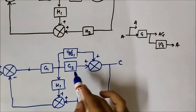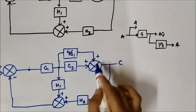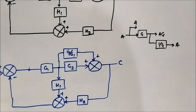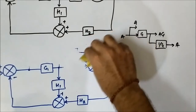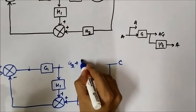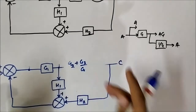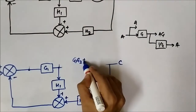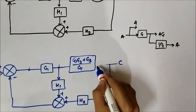Now again, these two blocks G2 and G3/G1 are in the forward path with a plus sign — their signal values are fed to a summing junction, so they are in parallel. They will get added up, so it will become G2 + G3/G1, which we can also write as (G1·G2 + G3)/G1. See how this is getting simpler and simpler.